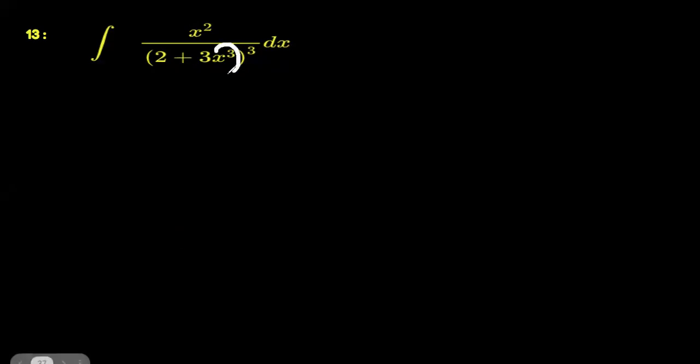Now you see this x cube, derivative of this x cube is x squared. So it makes sense to substitute the denominator as t. So what we are going to do, put 2 plus 3x³ is equal to t.